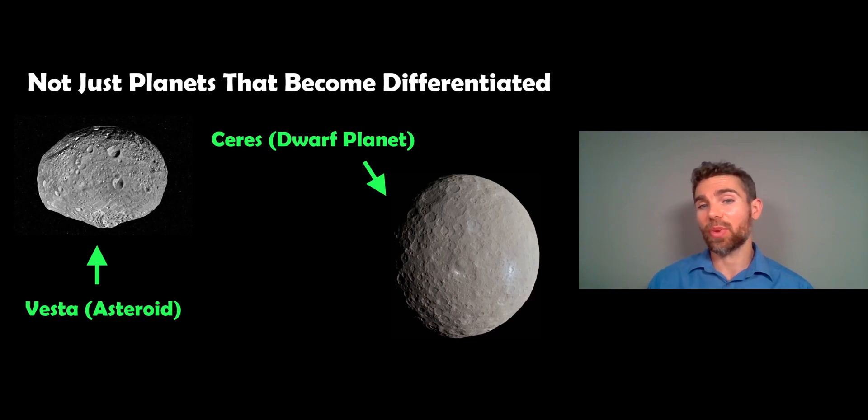So Vesta's not even spherical, but it could potentially still show evidence of differentiation internally as well. So it doesn't have to be a planet, although we call it planetary differentiation. It can be smaller objects as well. We just need that internal heat to actually melt it to then get your layering.